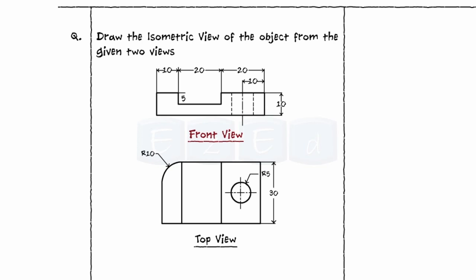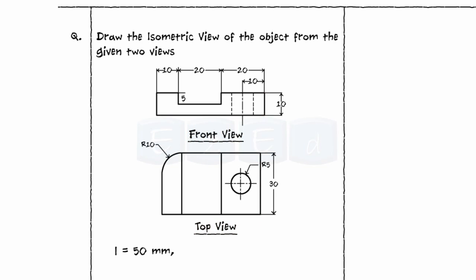Now concentrate on the front view. The horizontal lines in the front view represent the length whereas the vertical lines represent the height of the object. Similarly, in the top view the vertical lines represent the breadth of the object. Hence, from the given views the overall length of the object is 50mm, the overall height is 10mm and the overall breadth of the object is 30mm.